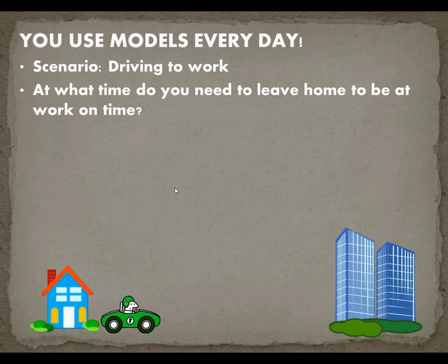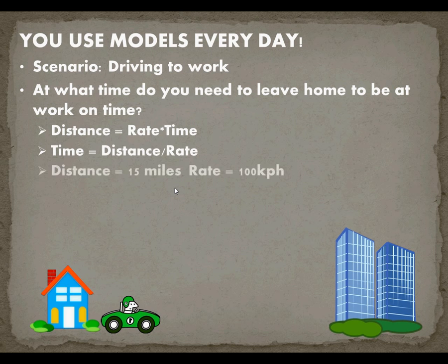What you took was this middle school physics equation: distance equals rate times time. You rearranged it and said the time it's going to take me to get to work equals the distance I have to drive divided by the rate I'm able to go. If I said the distance to work was 15 miles and the rate was 100 kilometers per hour, you could solve this equation, right? Time equals 15 miles divided by 100 kilometers per hour, and all of a sudden you're coming to a screeching halt because your units don't align.